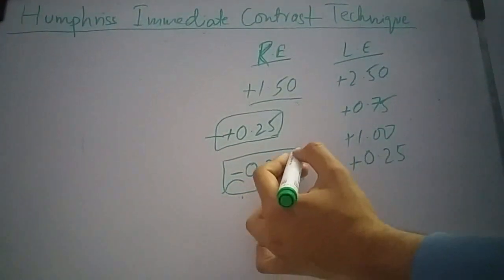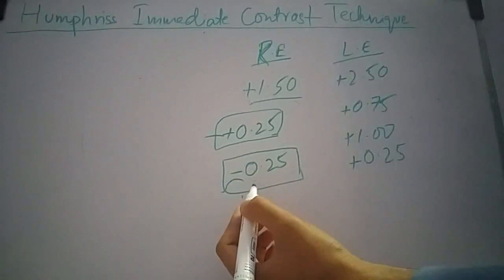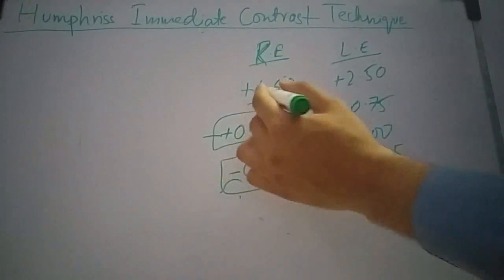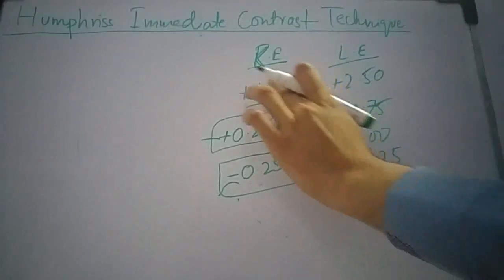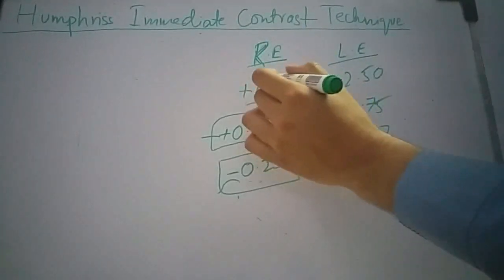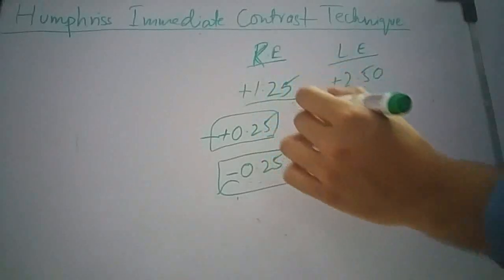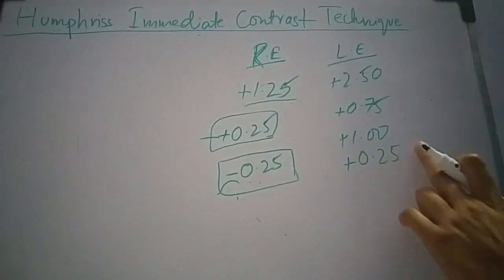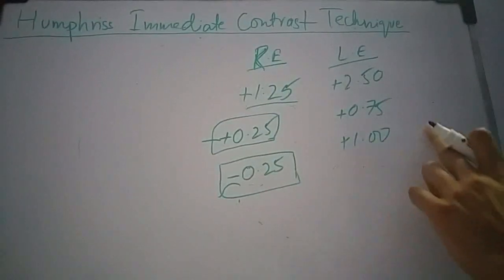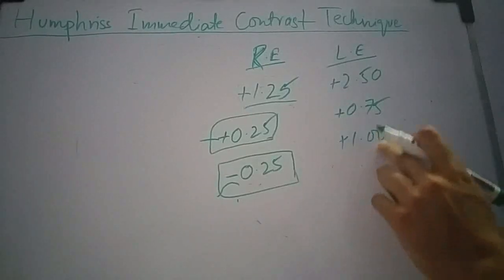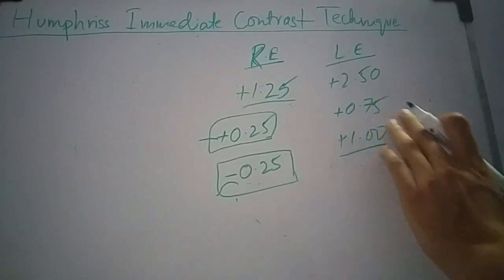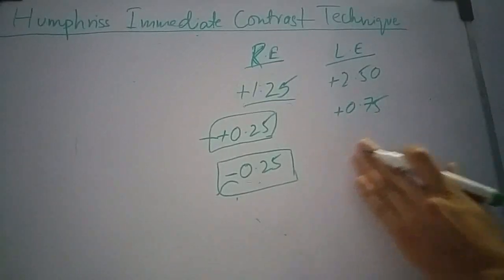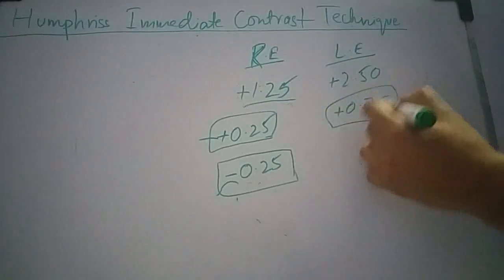If the patient appreciates minus 0.25, I will decrease the prescription in the right eye to plus 1.25 and also decrease the fogging so that the difference is maintained. In this case, if fogging is achieved with plus 1 lens, I will reduce it to plus 0.75.